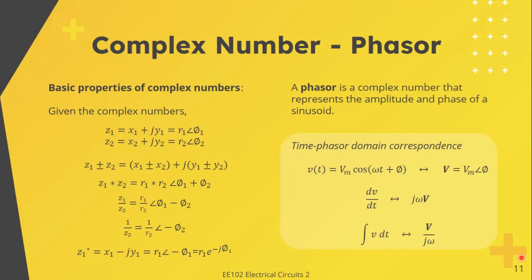Phasors. A phasor is just a complex number that represents the amplitude and the phase of your sinusoid. Sinusoids are easily expressed in terms of phasors, which are more convenient to work with than sine and cosine functions. For the time-phasor domain correspondence, to get the phasor representation of your sinusoid, first express it as cosine. If you're given a sine function, express it as cosine using the trigonometric identity shown in your slides. Then, once in cosine form, it's straightforward. The phasor is Vm∠φ, using the amplitude and phase.